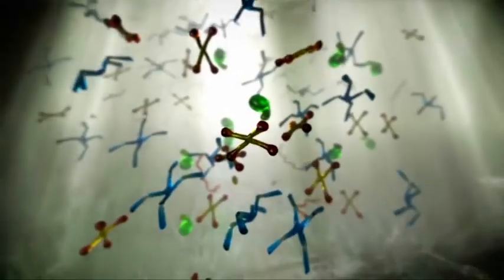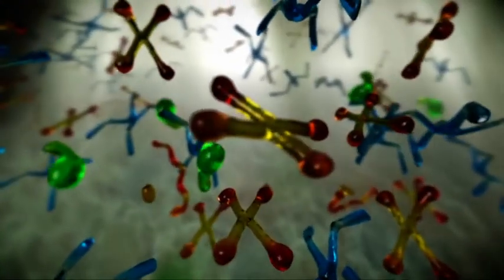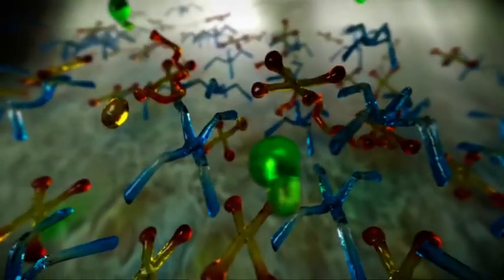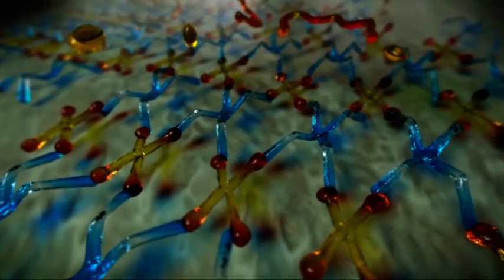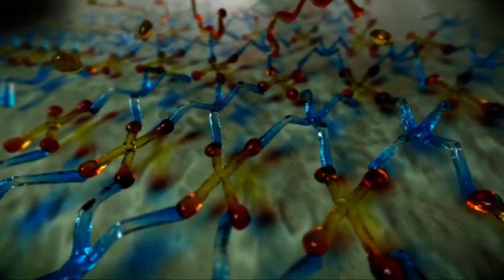After the initial coating forms, Systane Ultra lubricant eye drops interact with divalent ions in the tear film, releasing the sorbitol and allowing stronger cross-linking between borate and HP-GUAR. The result is a tightly structured protective matrix over damaged areas of the ocular surface.